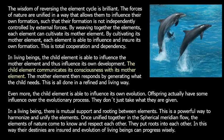The real key is that when you bring all the elements unified together in the heart matrix, in the heart center, in the Spherical Meridian Flow, and have them communicate and cooperate, you then allow a living being to have the ability to evolve through time. Evolution is built into this weaving of the elements. Offspring actually have some influence over the evolutionary process — they don't just take what they are given. In a living being, there is mutual support and rooting between elements. Once unified together in the Spherical Meridian Flow, the elements of nature come to know and respect each other, put roots into each other, and their destinies are ensured so that evolution of living beings can progress wisely.